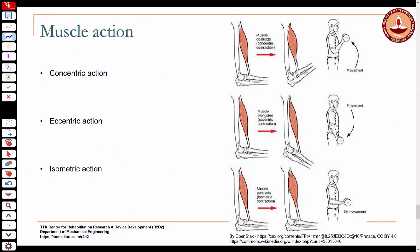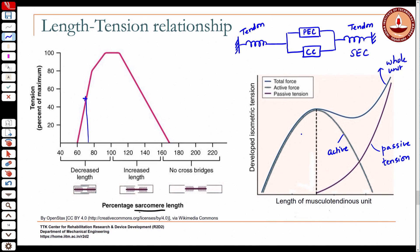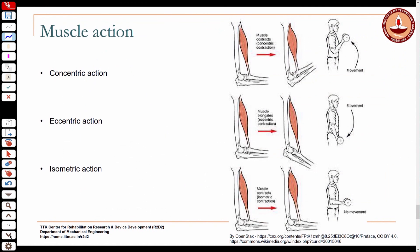Moving on. When we say a muscle is activated at a particular length, I use the term isometric. There are three types of muscle action that are possible. Basically, you have concentric action, where the muscle actually shortens.